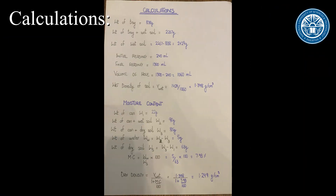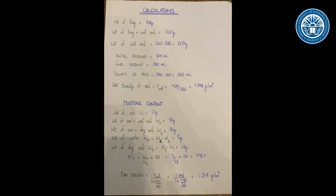We started off by measuring all of the required data such as weights, volumes, and wet density. We represented weight of can by W1, weight of can plus wet soil by W2, and weight of can plus dry soil by W3. For calculation of moisture content present in soil, we calculated weight of water and weight of dry soil by subtracting the weights. The moisture content found was 7.93%. At last, 1.249 gram per centimeter cube dry density was calculated using the formula as shown.